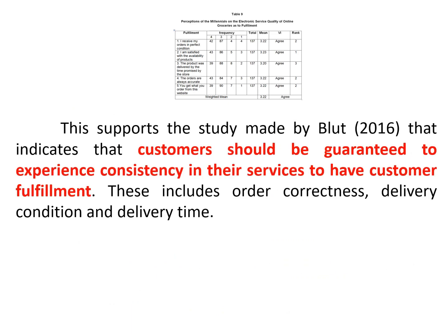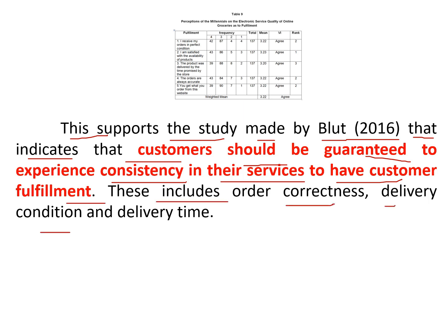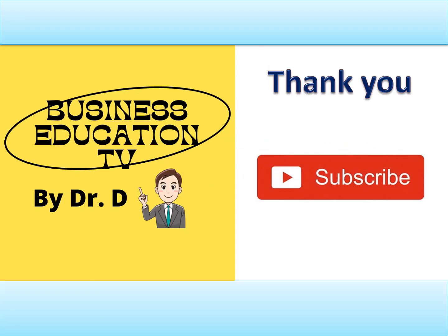The last paragraph associates the findings with related literature and studies. For example: This supports the study by Blood (2016), which indicates that customers should be guaranteed consistency in services to achieve customer fulfillment, including order correctness, delivery condition, and delivery time. That concludes the three-paragraph structure for the presentation, analysis, and interpretation of data. Thank you so much for watching.